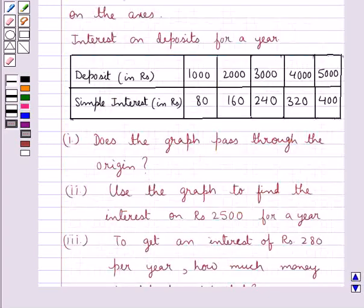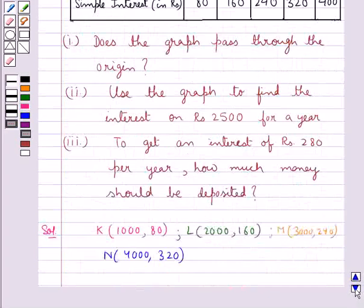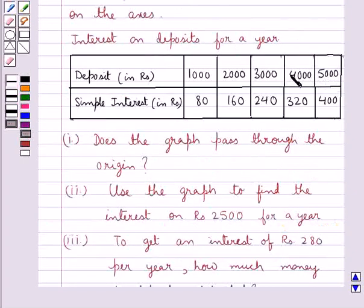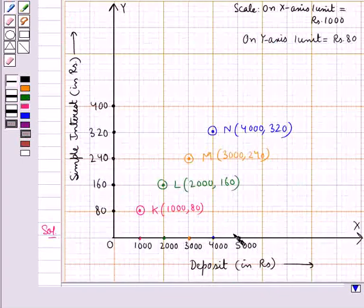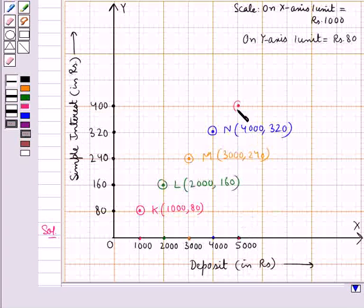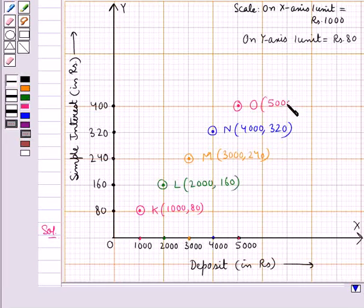The next point is O with coordinates (5000, 400), where 5000 is the deposit and 400 is the simple interest. We locate 5000 on the x-axis, then move along the y-axis to the point corresponding to 400, and mark this as O with coordinates (5000, 400).